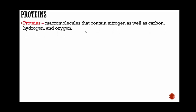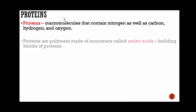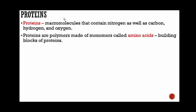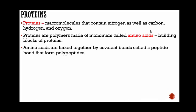Protein is the last macromolecule. Proteins are macromolecules that contain nitrogen as well as carbon, hydrogen, and oxygen — those four atoms make up a protein. Proteins are polymers, meaning more than one monomer, made of monomers called amino acids. Amino acids are the monomers; when they come together they form polymers called proteins — amino acids are the building blocks of proteins. Amino acids are linked together by covalent bonds called peptide bonds that form polypeptides.